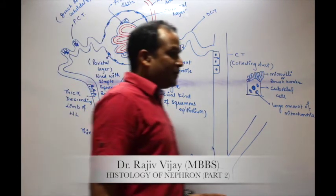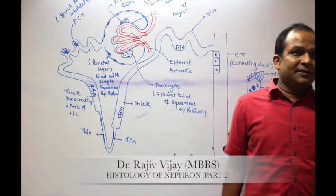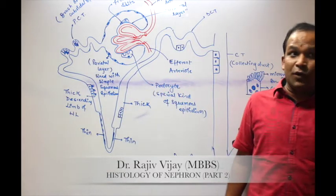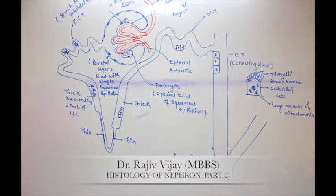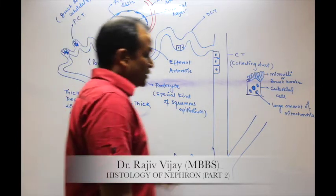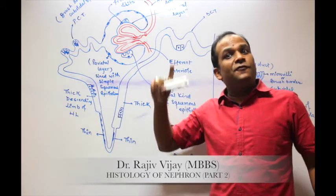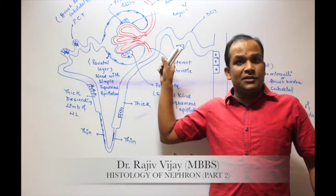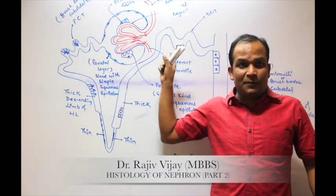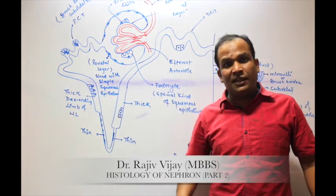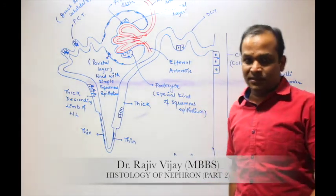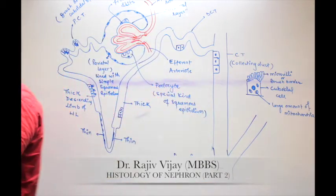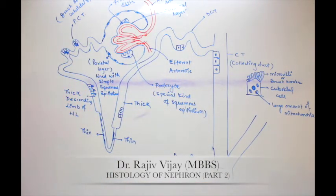In cuboidal epithelium, two things need to be kept in mind. First, brush border is present in the PCT — the PCT is lined with cuboidal but it is brush border cuboidal epithelium. Second, the visceral layer of Bowman's capsule has squamous epithelium that is modified into podocytes, and podocytes are characteristic of the kidney.